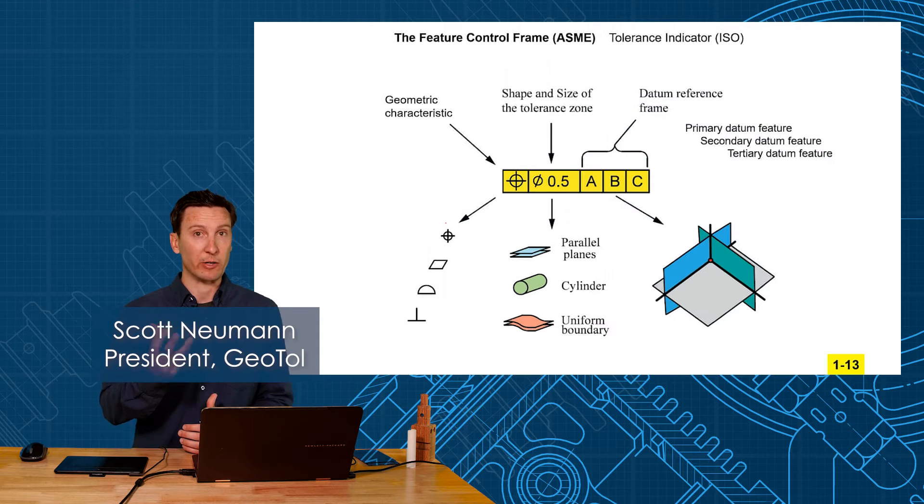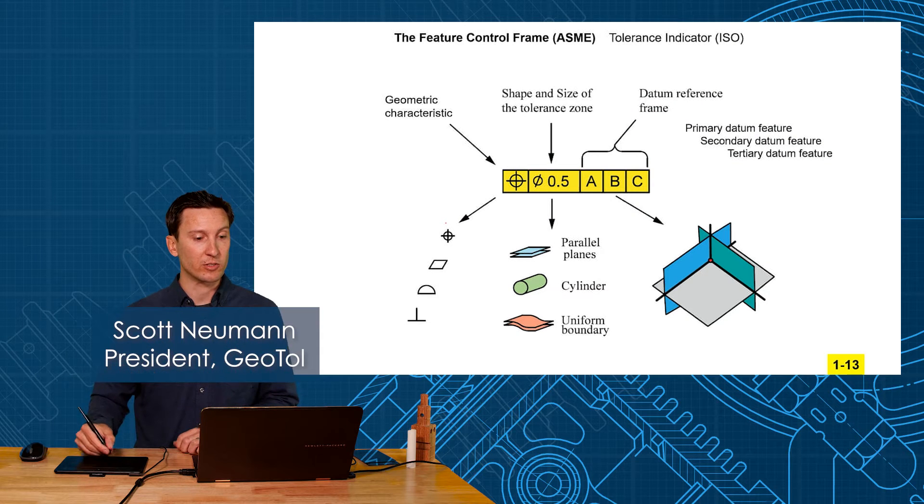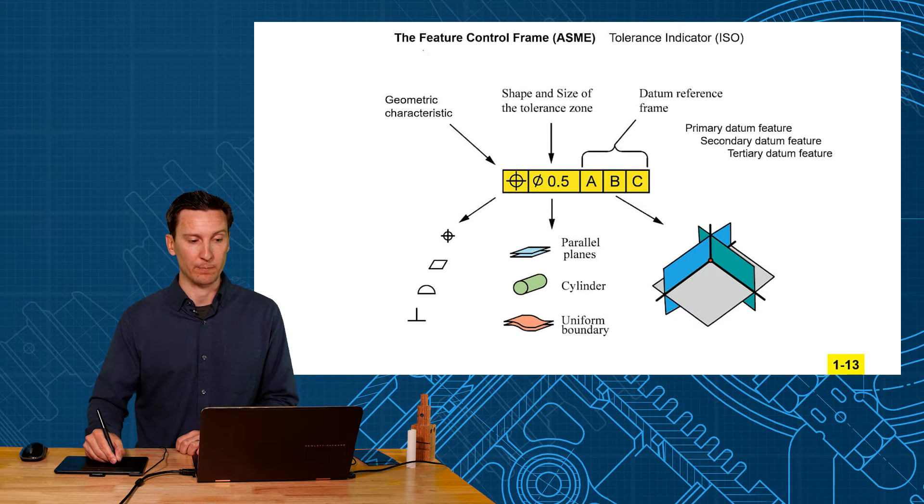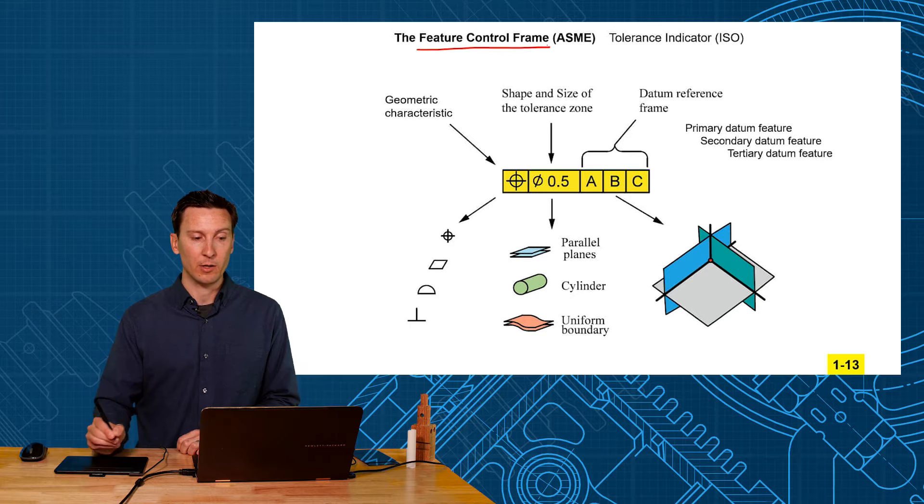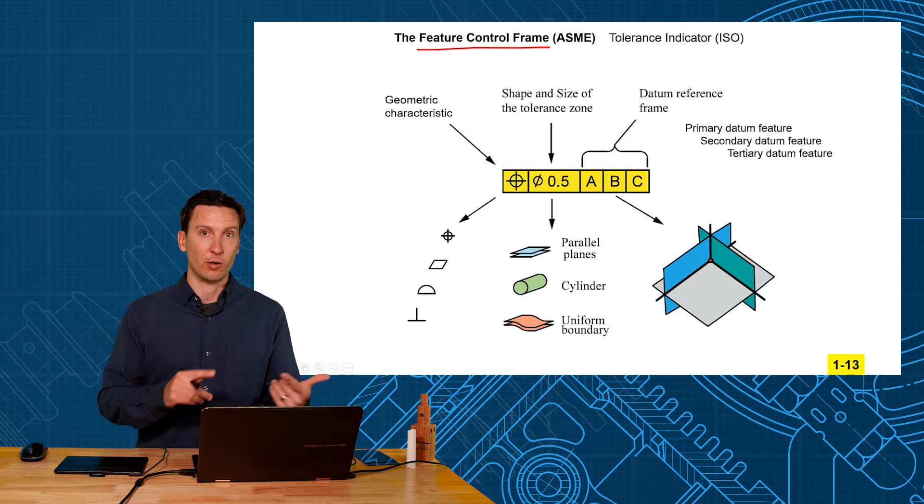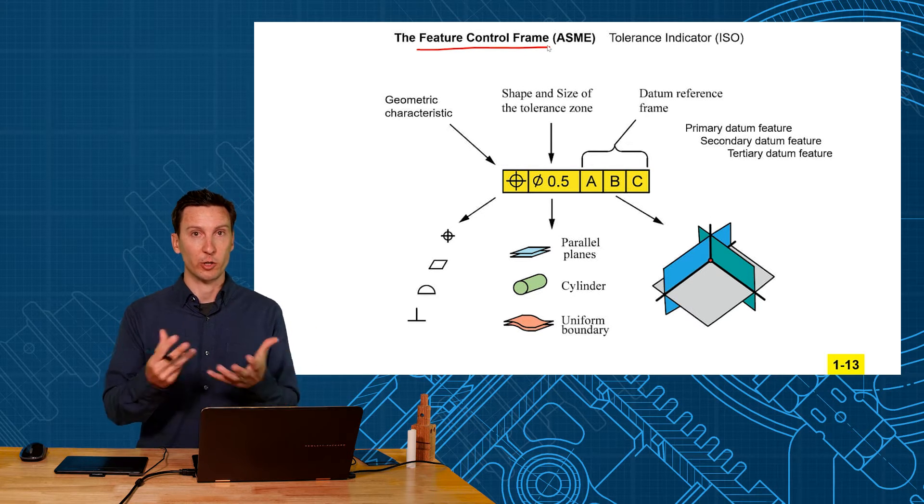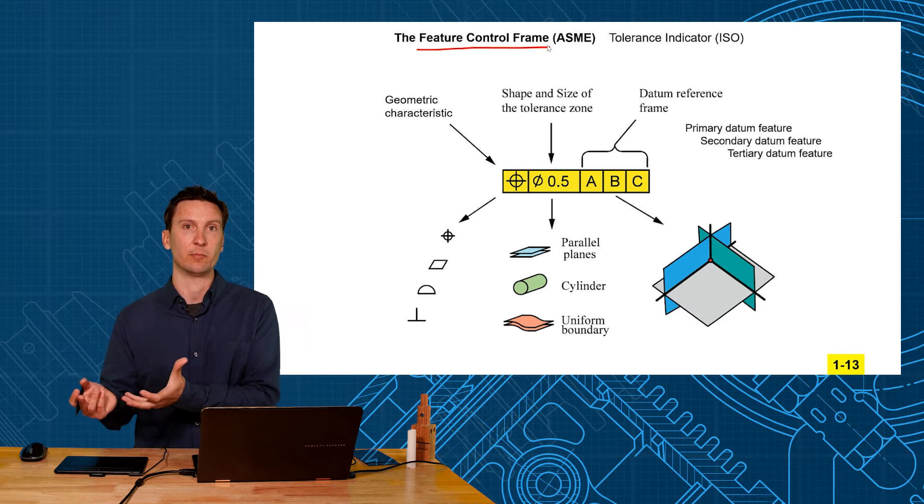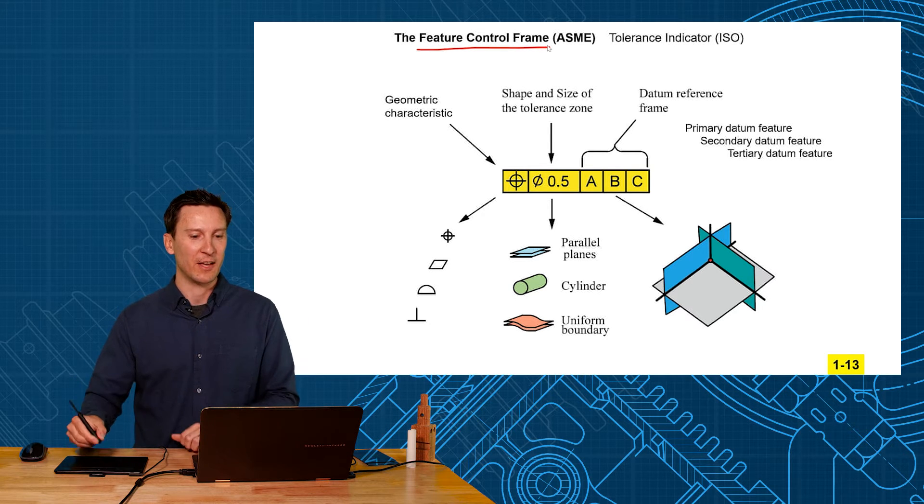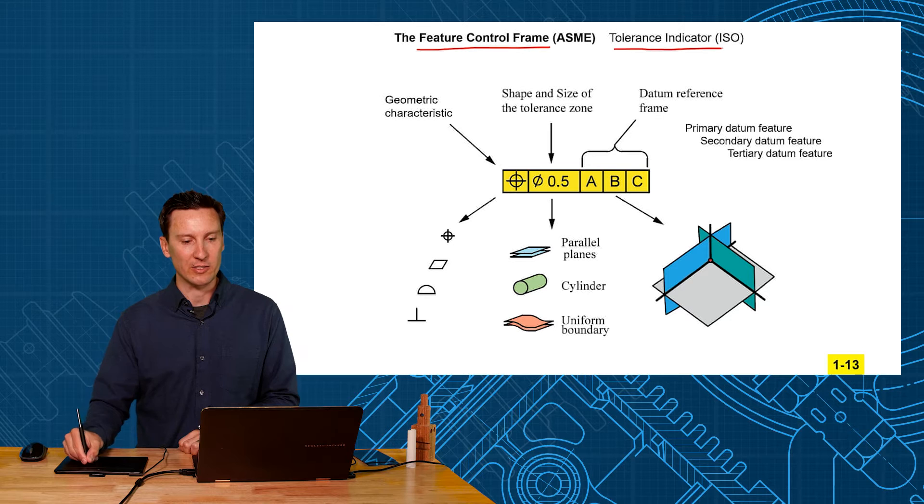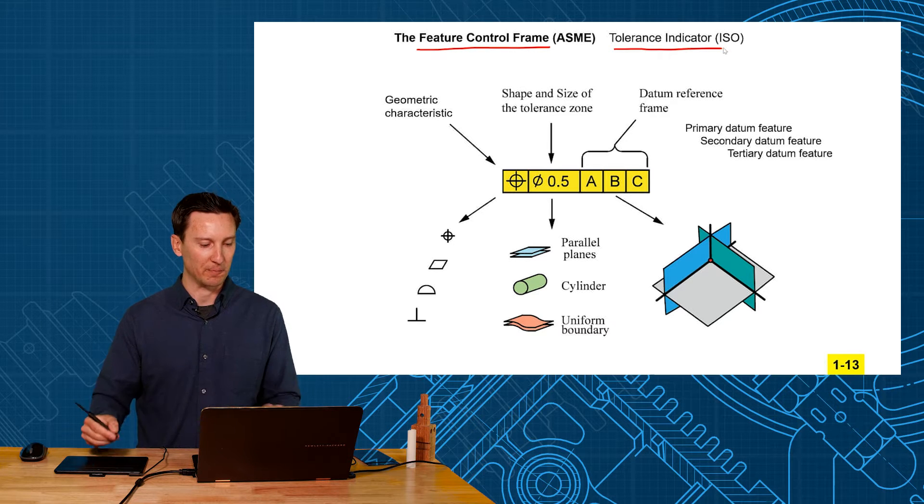Now we're going to go into the basics of geometric tolerancing symbology. This is called the feature control frame. It's a great name because you point to a feature - a hole, a slot, a surface - and you want to control it with this frame. In ISO they call this a tolerance indicator. I don't think it's as good a name as feature control frame.